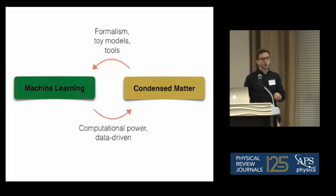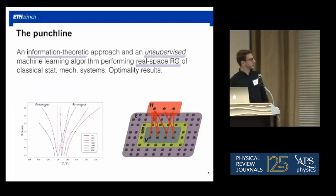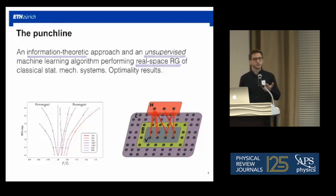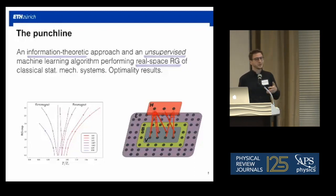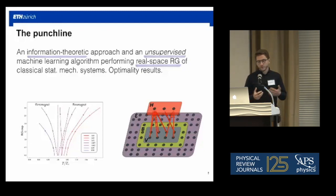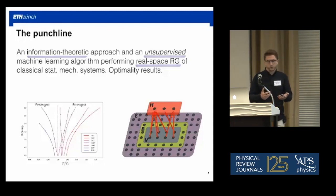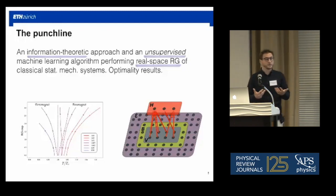With that I'll finish the introduction and go to the main part. Here's the punch line: we have a formulation of real-space RG in terms of information theory, and inspired by this theoretical picture we have an unsupervised machine learning algorithm for classical statistical physical systems, which is supposed to help extract the relevant low-energy or large-wavelength degrees of freedom. Using that, you can try to reconstruct the RG flow or compute critical exponents, and we also have some analytical understanding of why this makes sense.